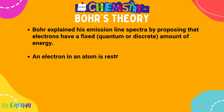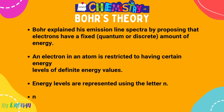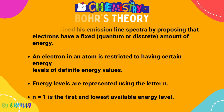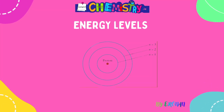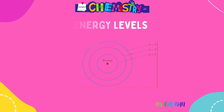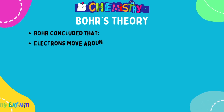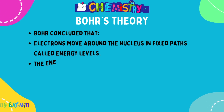Bohr's theory — a common exam question. Bohr explained his emission line spectra by proposing that electrons have a fixed amount of energy, called a quantum (discrete can also be used). An electron in an atom is restricted to having certain energy levels of definite energy values. Energy levels are represented by the letter n: n=1 is the first and lowest energy level, then n=2 when the first is filled, and then n=3 when the second is filled.